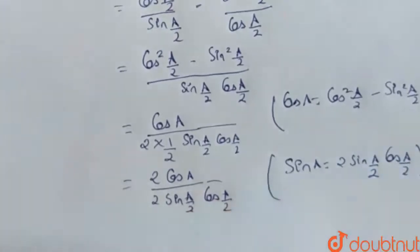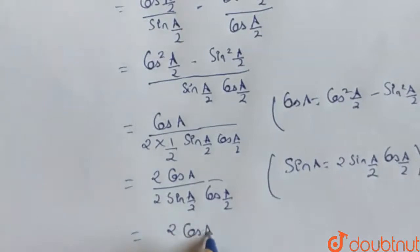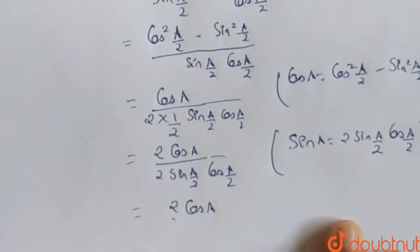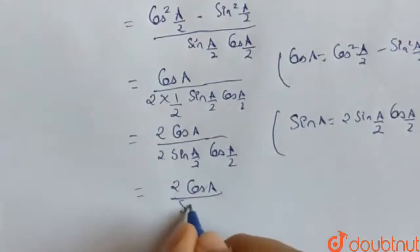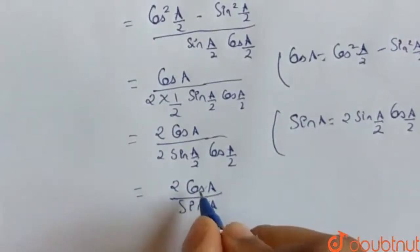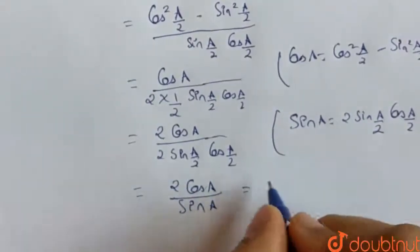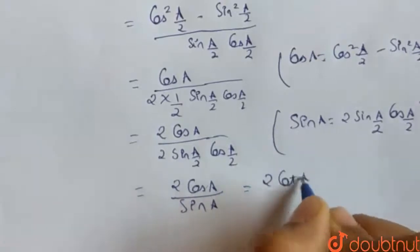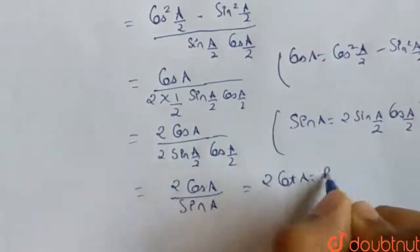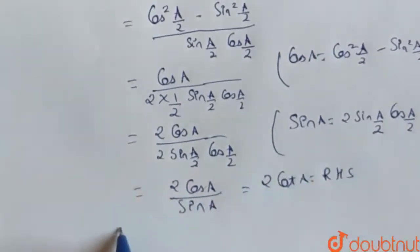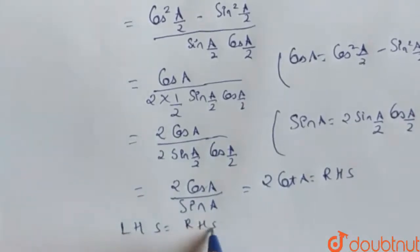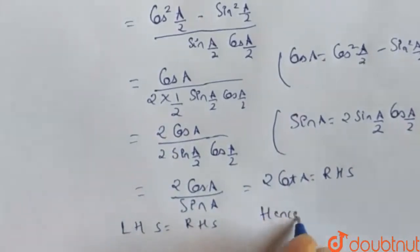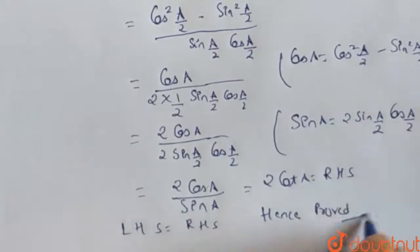Applying the identity, we get 2·cos(a) over sin(a). Since cos(a) over sin(a) is cot(a), we get 2·cot(a), which is our RHS. Therefore LHS equals RHS. Hence proved. That is our answer, friends. Thank you.